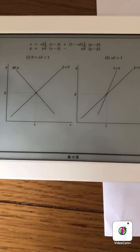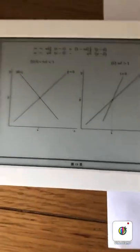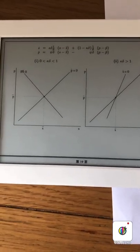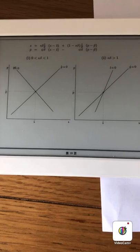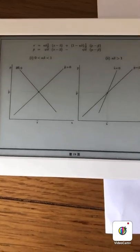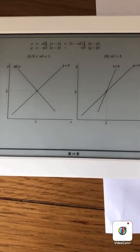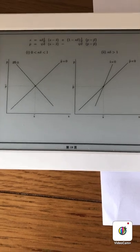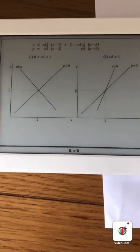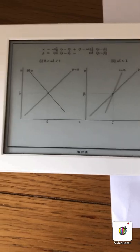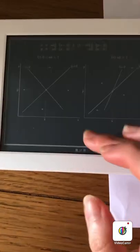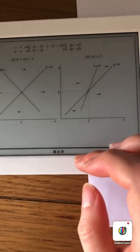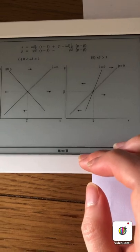Starting with the s=0 line, if we increase p by a little bit, then from the first equation we can see that with higher p, s dot is going to be larger than 0. That means s is going to increase. To the right of s=0, we go to the right. To the left, we go to the left.